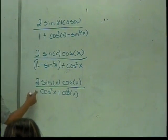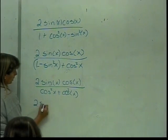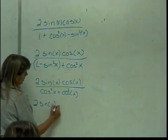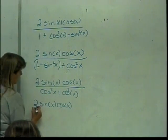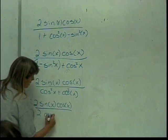Now I can make this simpler, so I'll have 2 sin(x) cos(x). Since I have 2 of these, I can just write it as 2 cos²(x).